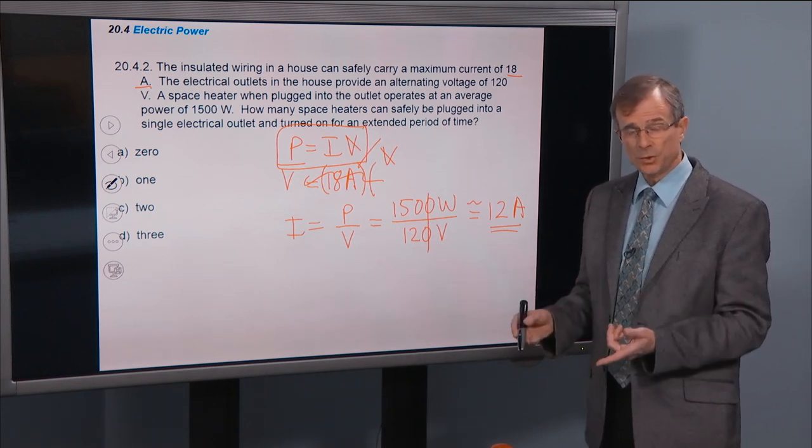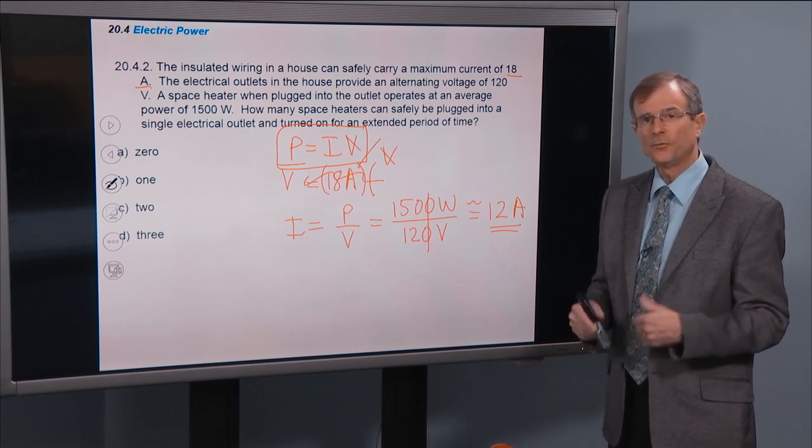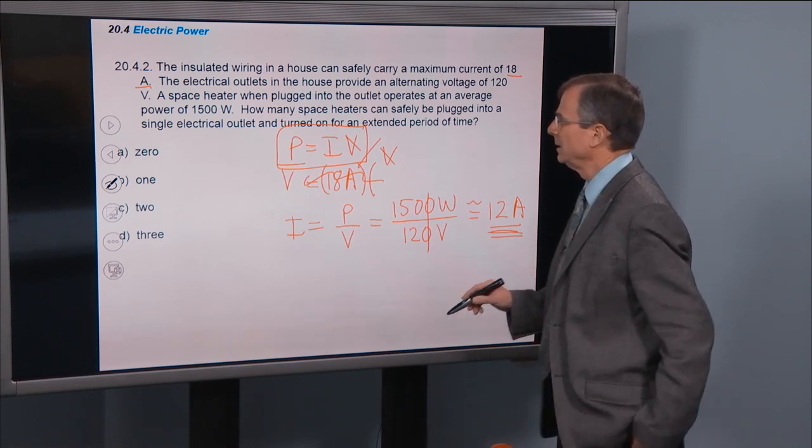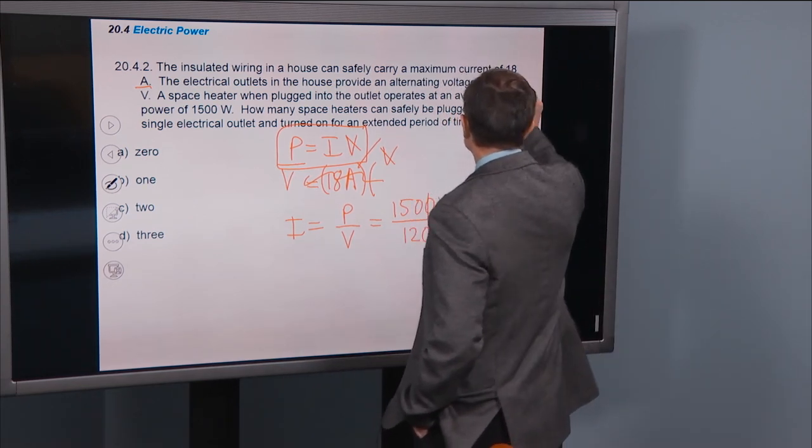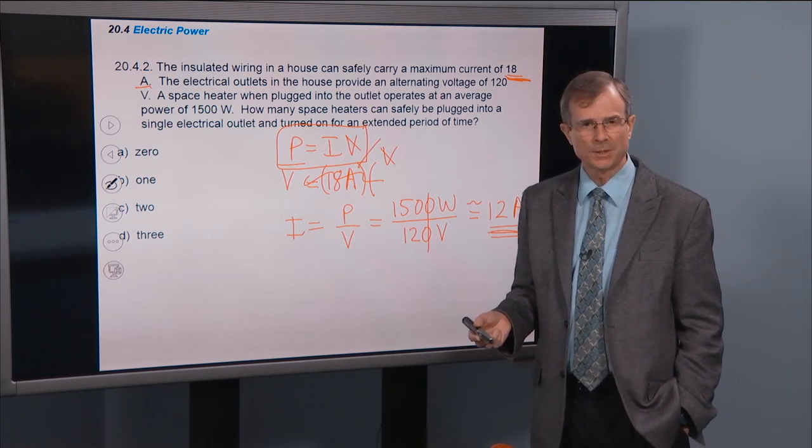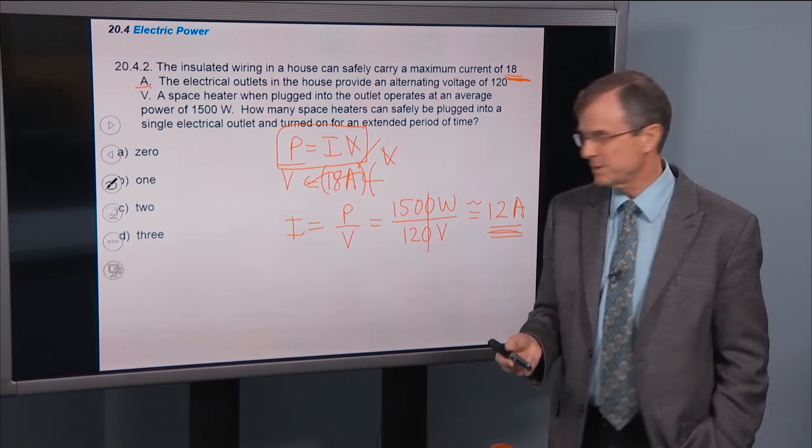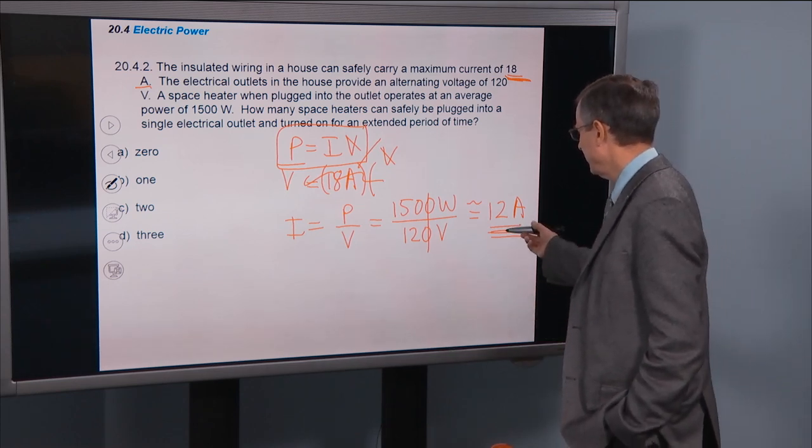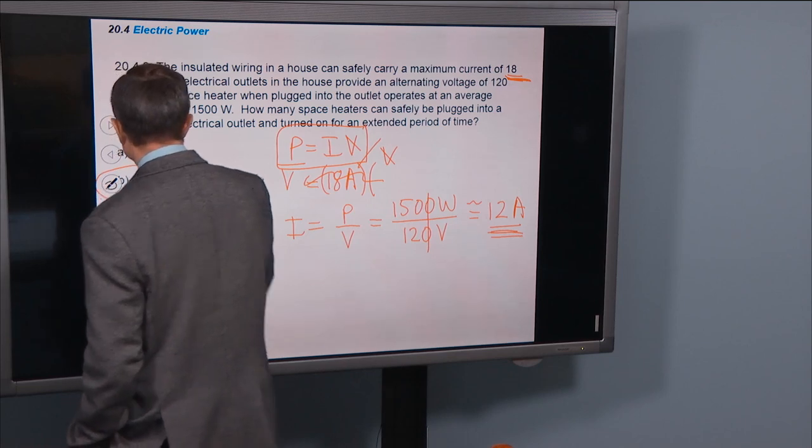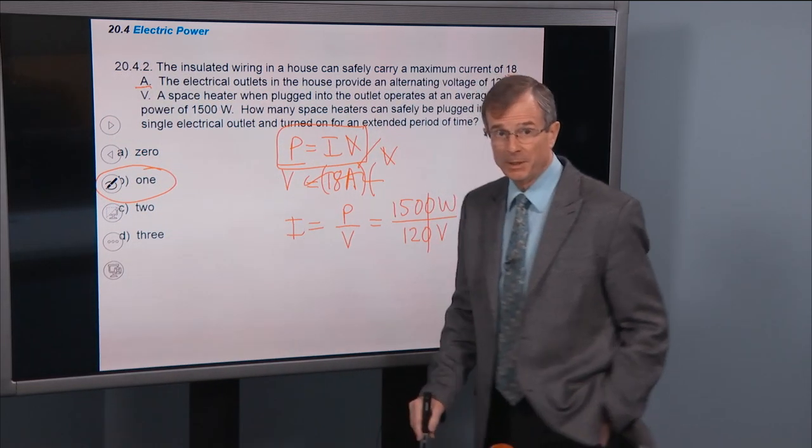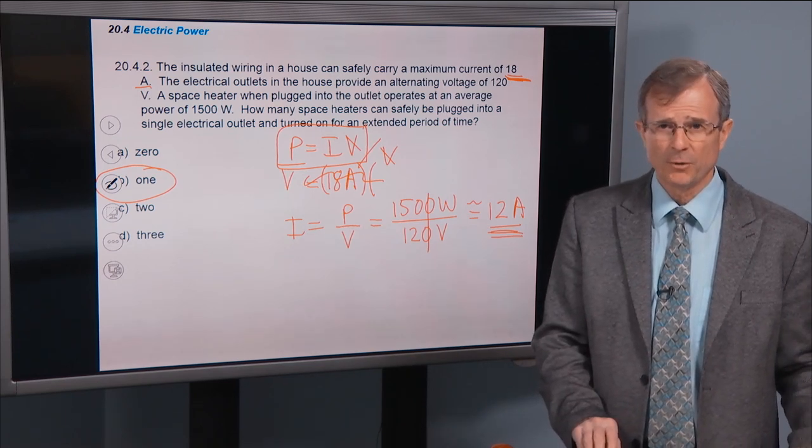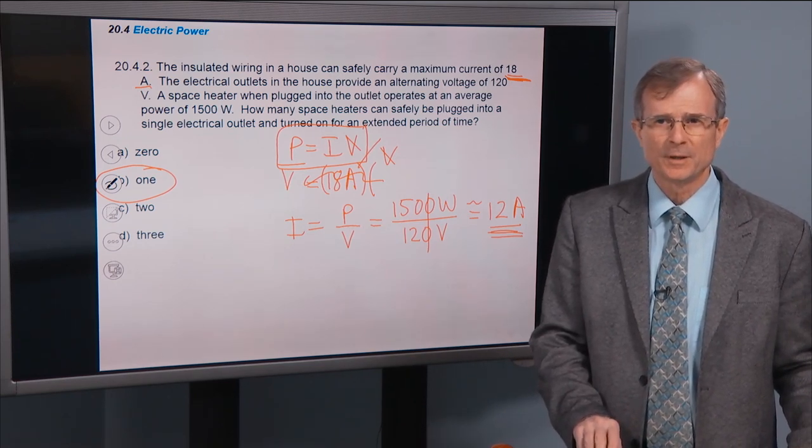If you put two of them into the circuit, you're going to draw double that current. And if you double this current, then you're in the danger zone. Because your circuits can only handle 18 amps. And twice this would be 24 amps. So you can really only safely put one space heater on that circuit if they have a power of about 1500 watts.